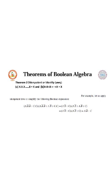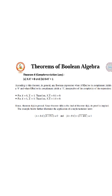Theorem 3 is also called the identity law. That is x into x is equal to x, and x plus x is also equal to x. Applying a Boolean expression to it, what we conclude is that any Boolean expression AND or OR with itself equals that same expression. Identity law says: x plus x is equal to x.